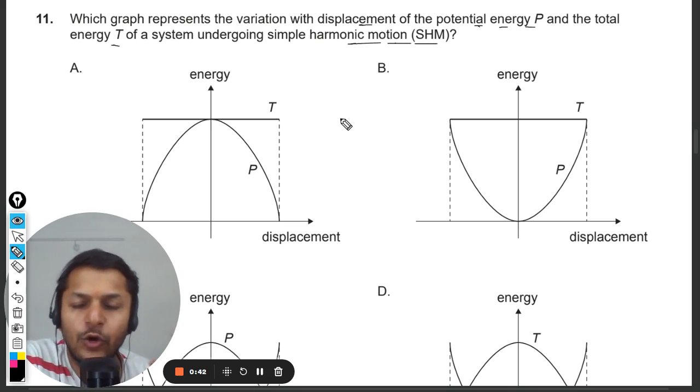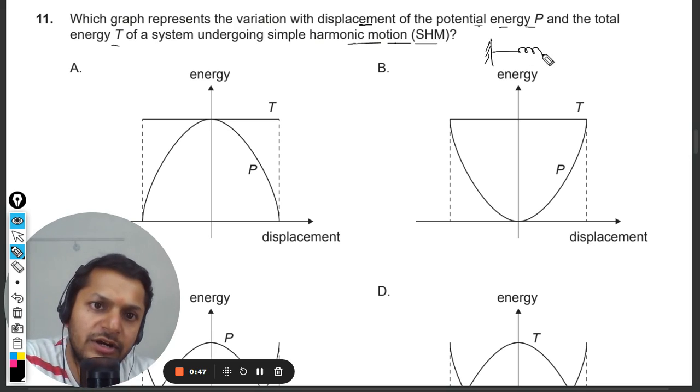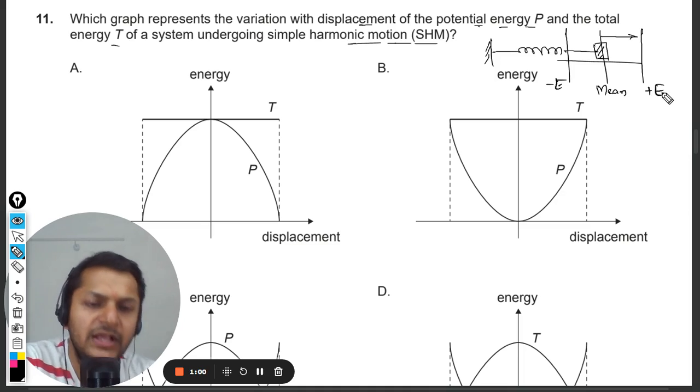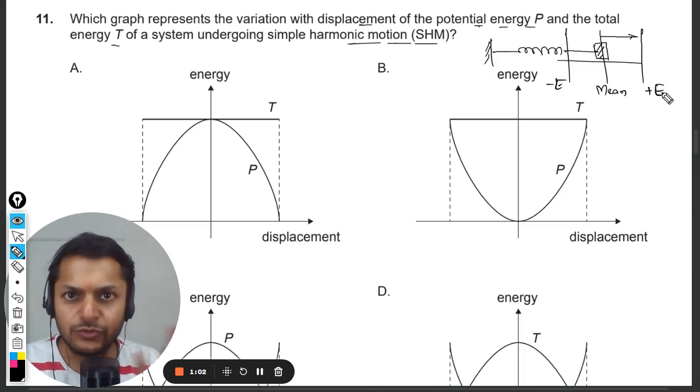So there is this spring, there is this mass. The mass is standing at the mean position, okay. And so it would be going to the extreme position. This will be the negative extreme, this is positive extreme, and this is how the body is going to move in the simple harmonic motion.